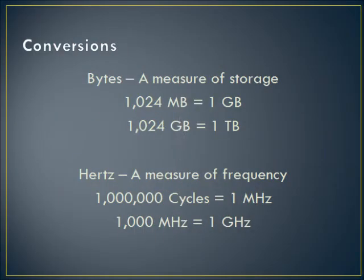To understand some of the conversions and measurements that are going to be used in this video, here is a quick slide to show you. Bytes are a measure of storage. In one gigabyte there are 1024 megabytes, and in one terabyte there are 1024 gigabytes. A hertz is a measure of frequency; there are one million cycles in one megahertz, and one thousand megahertz would equal one gigahertz.